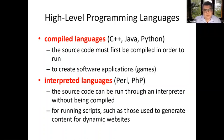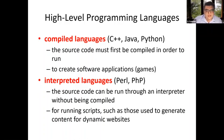The second group of high-level programming languages are called interpreted languages — for example, Perl, PHP, JavaScript, or HTML. They are called interpreted languages because the source code can be run through an interpreter without being compiled. The interpreter is a special application that reads the source code line by line and executes it, such as those used to generate content for dynamic web pages.